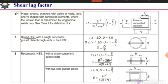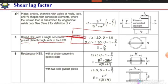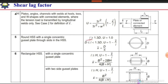For round hollow sections with a single connection gusset plate through a slot in the hollow section — where we make a slot, insert the plate, and weld on all four sides — if the weld length is greater than 1.3 times the diameter D, then U equals 1. If the weld length is between D and 1.3D, we use the expression 1.1 minus x-bar over L, where x-bar equals D over pi.